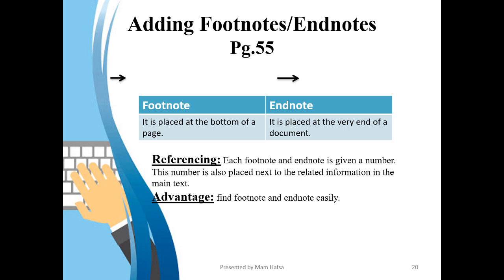Now what is referencing? Each footnote and endnote is given a number. This number is also placed next to the related information in the main text. This is called referencing. Now what's the advantage of referencing? It finds footnotes and endnotes easily. You can access this feature by clicking the references tab and footnote and note group.